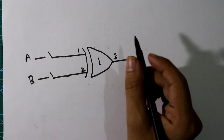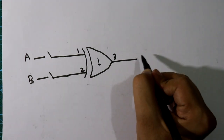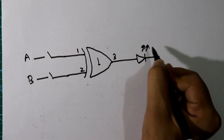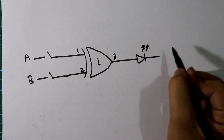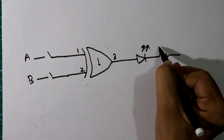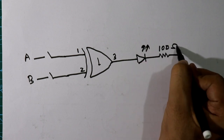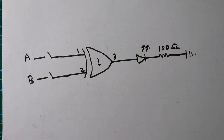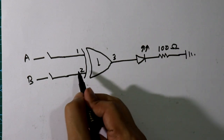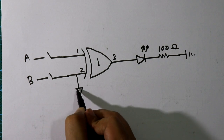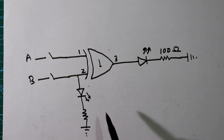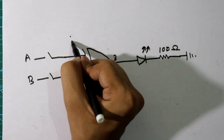With the output pin, pin number 3, we will connect one LED — this will be our output LED — and connect one 100 ohm resistor, then connect it to ground. We will also connect one input LED with a 100 ohm resistor connected to ground for input A.